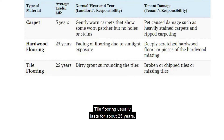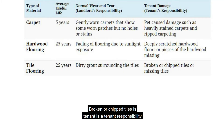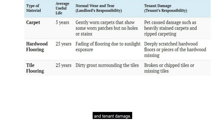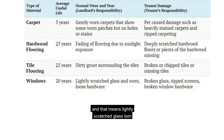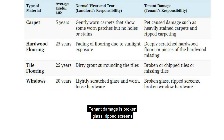Tile flooring usually lasts for about 25 years. Dirty grout surrounding the tile is normal wear and tear. Broken or chipped tiles is tenant responsibility and tenant damage. Windows usually last for 20 years — lightly scratched glass and torn or loose hardware is normal wear and tear. Tenant damage is broken glass, ripped screens, and broken hardware.